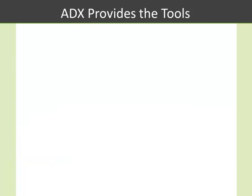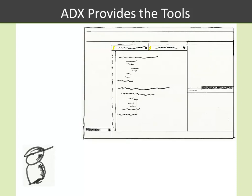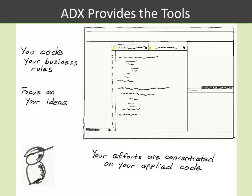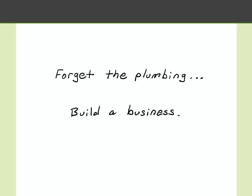Adin Express provides the tool set that allows you to rapidly build Office applications. Using Adin Express, you can build your components visually, and then switch over into the code window and write the code that implements your business rules. The advantage here is that you can focus on your ideas, and your efforts are concentrated on writing your applied code. The net result being that you can forget about the plumbing and get on with building a business.